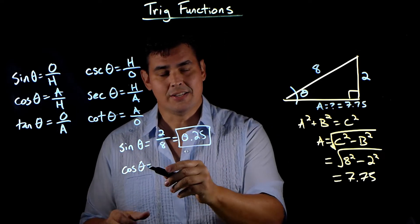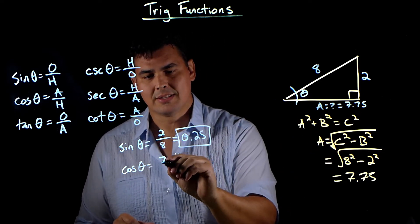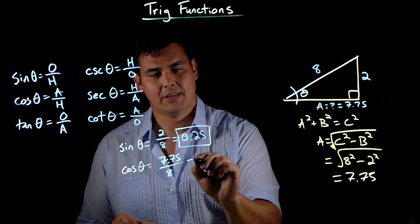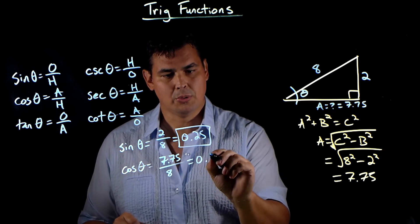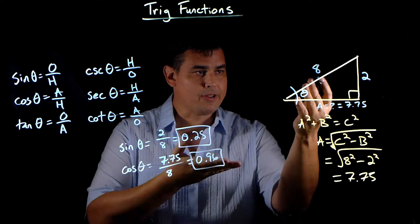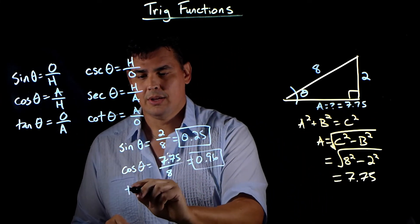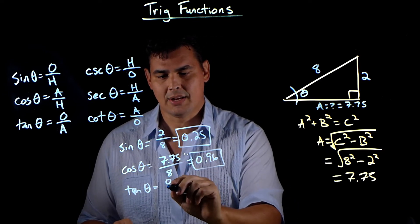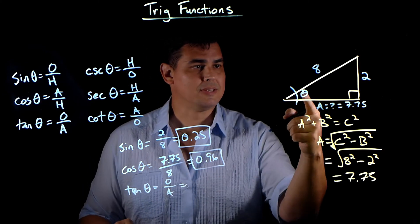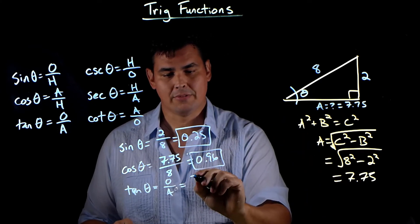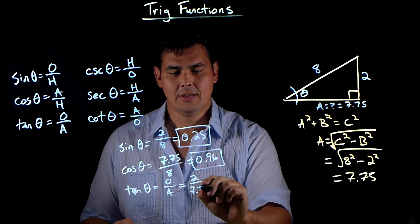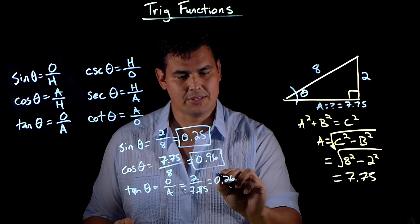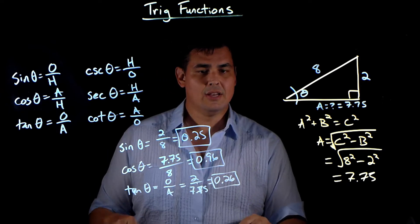Now I can do cosine: adjacent over hypotenuse is 7.75 divided by 8, which comes out to 0.96. Now we're home free because we've got all the sides. Tangent theta equals the opposite side over the adjacent side: 2 over 7.75 equals 0.26.